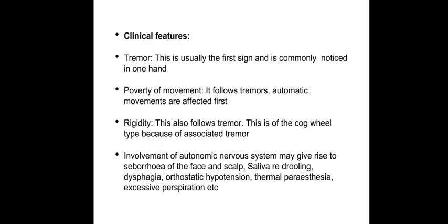Coming to the tremor, this is usually the first sign and commonly noticed in one hand. To start with it is fine but gradually becomes coarse as the disease advances. It is regular and static. Rate is 2-6 cycles per second. This is mostly manifested in the distal parts of the limbs. Tremor remains localized in one hand for a long time and after months or years spreads to the opposite hand and gradually to the lower limbs. Tremor is also noticed in the tongue, eyelids, lips, around the mouth, and lower jaw.